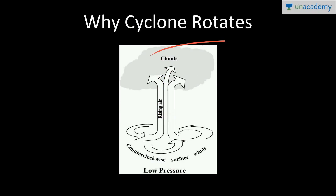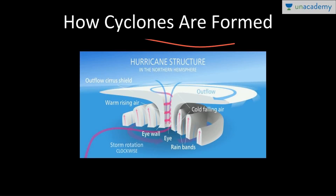Tropical cyclones require certain conditions to form. Warm moisture is derived from tropical oceans where the sea surface temperature should be 27 degrees Celsius or more. Winds near the ocean surface blow from different directions, converge, and cause air to rise, forming storm clouds. The Coriolis force induces spin. Water warms later than land, so cyclones arise in late summer when water temperature reaches 27°C, leading to huge evaporation, rising air, and intensifying low pressure.